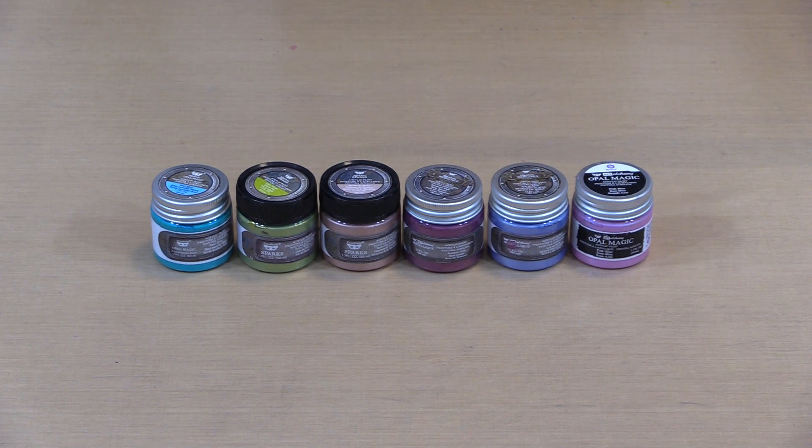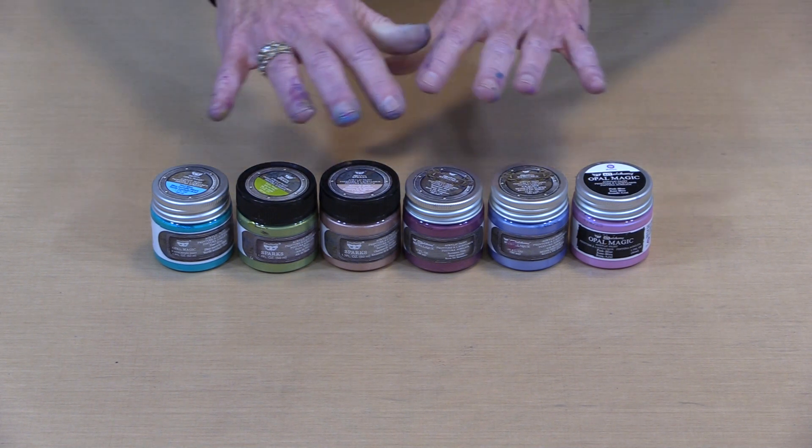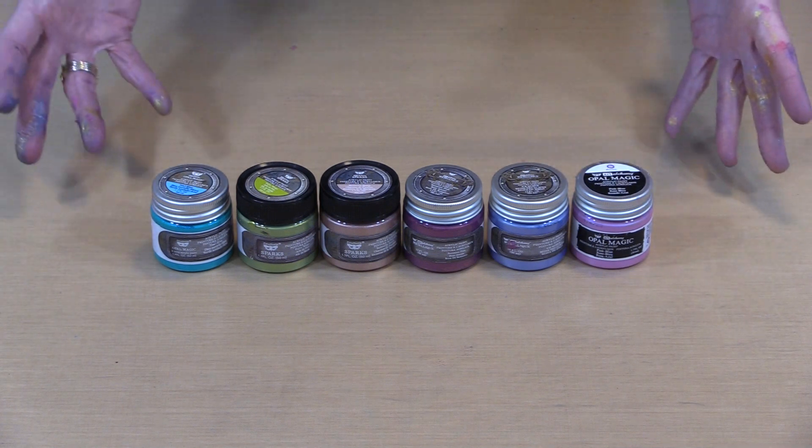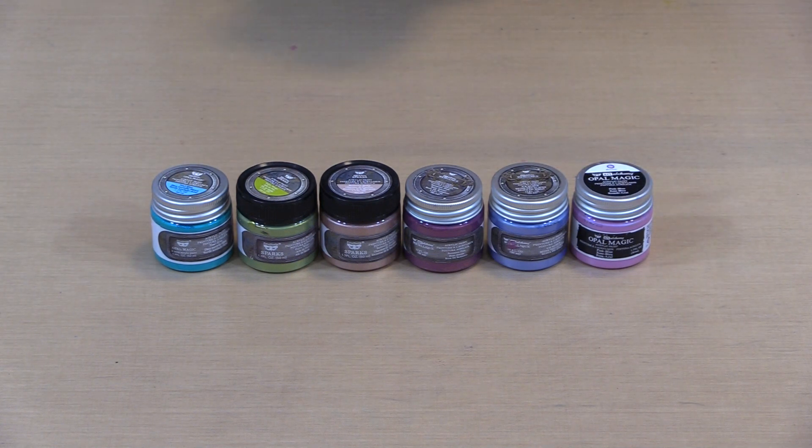Art Alchemy is a water-based paint line, which means that you can intermix all of these colors. You can bring in other brands of paint that are water-based, and you can mix them into anything that you want, which means if you're of a mind, you can create something totally unique to you and the project that you're working on.